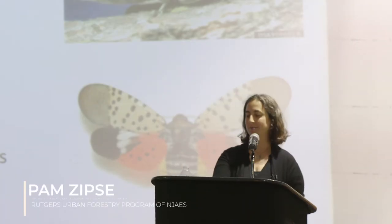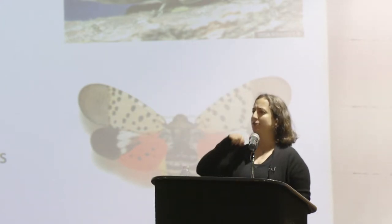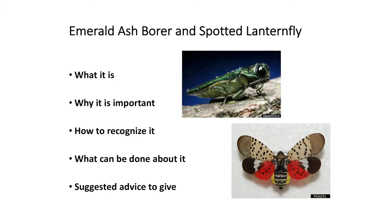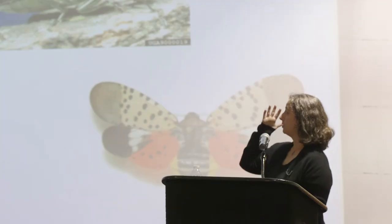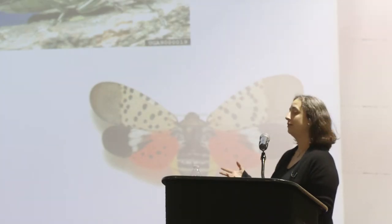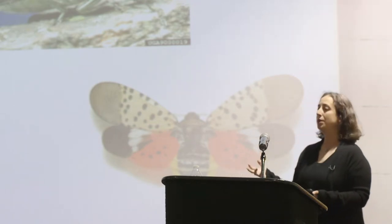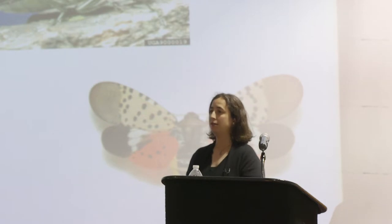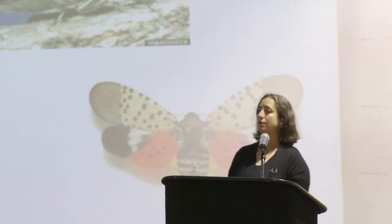Thanks for having me. I'm excited to share some bad news for plants, unfortunately. Is everyone here a Master Gardener? My goal is to talk about emerald ash borer and spotted lanternfly as two really critical insect pest problems that we have in our tree resource. I want to talk quickly about what they are, why they're important, how to recognize them, what can be done about them, and some suggested advice for when you might receive calls about these two insects or the host plants they infest.